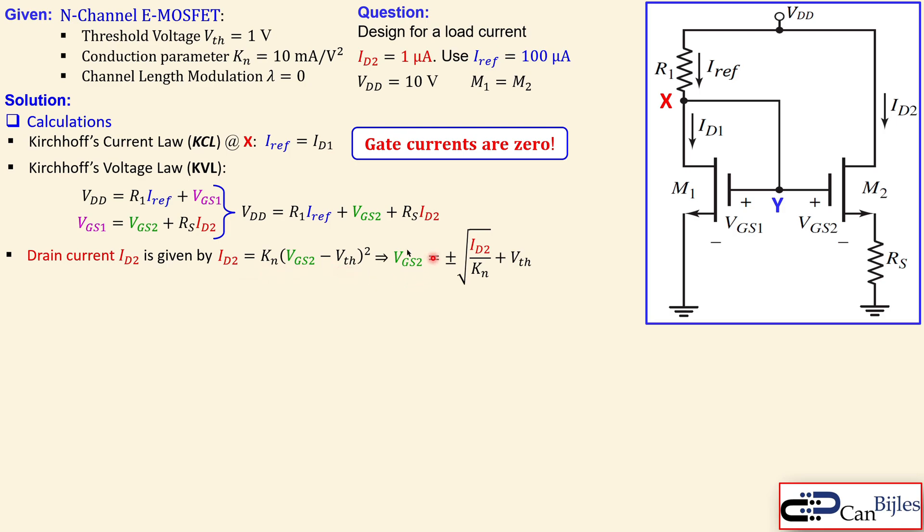Now we can express the gate-to-source voltage of the second transistor here using this rewriting of this expression. Now we have this expression. Now when you substitute the values...